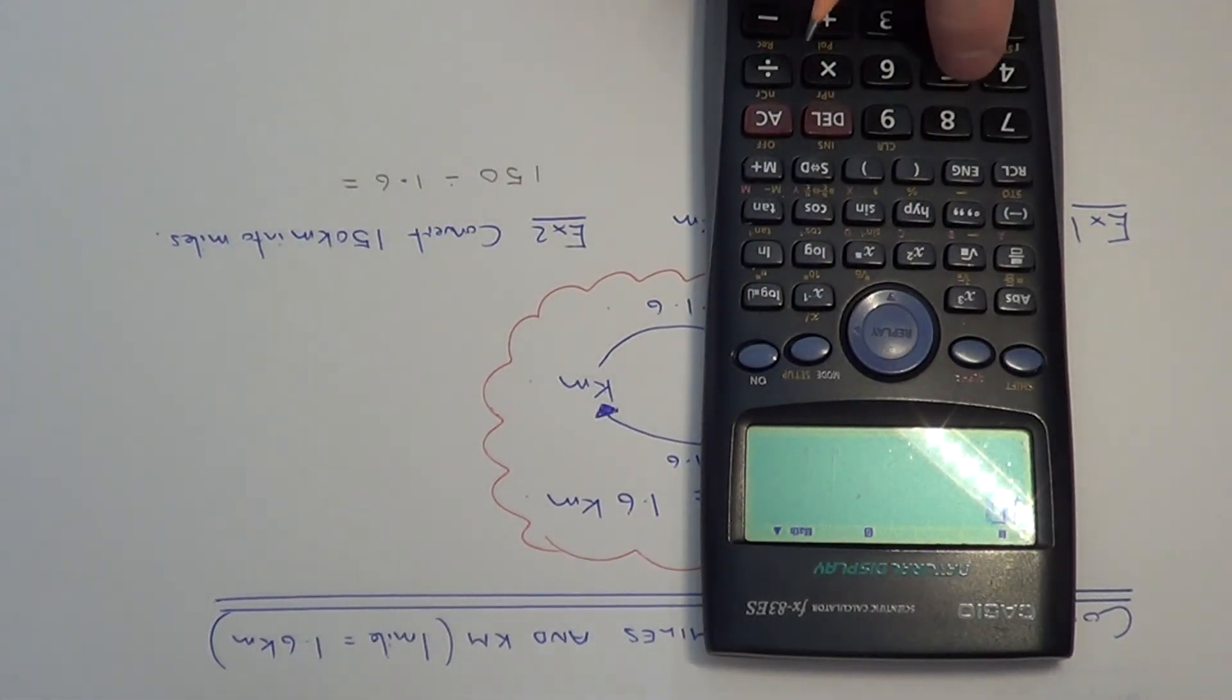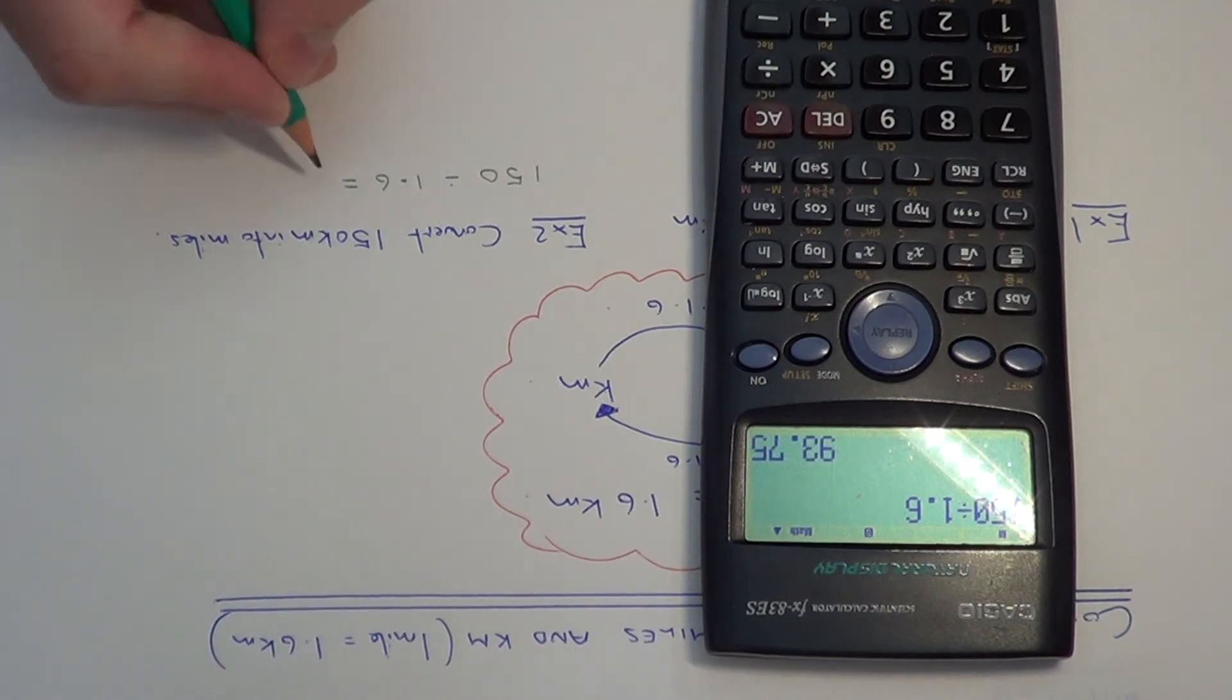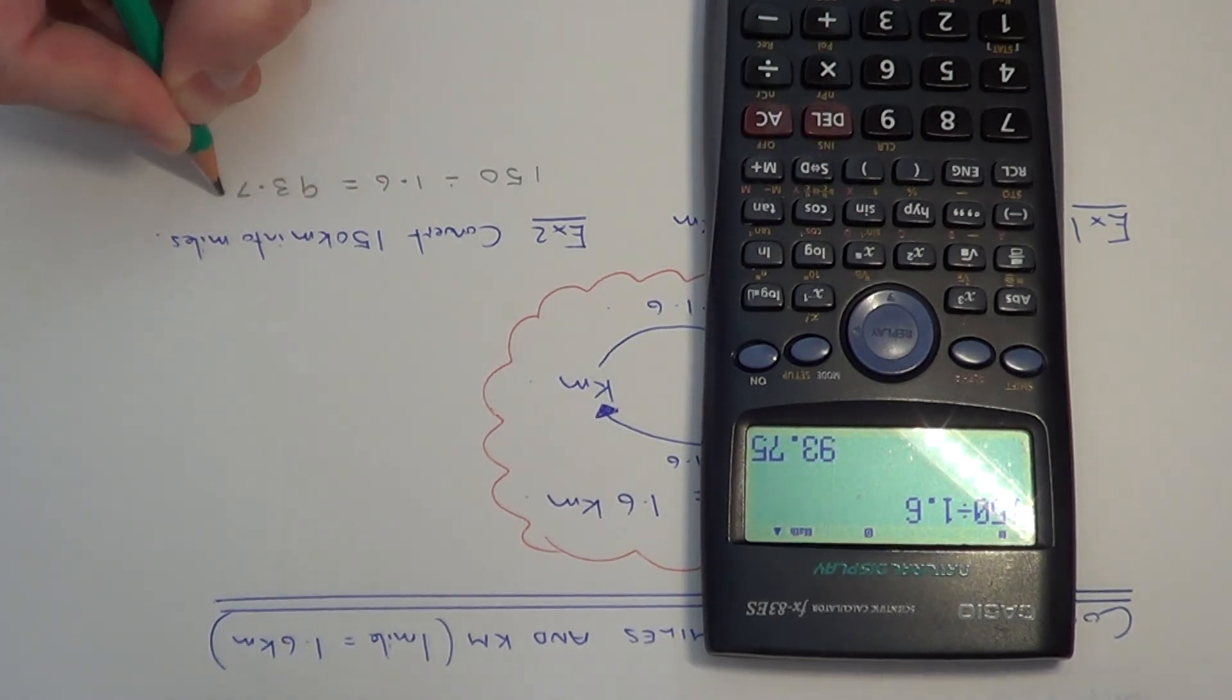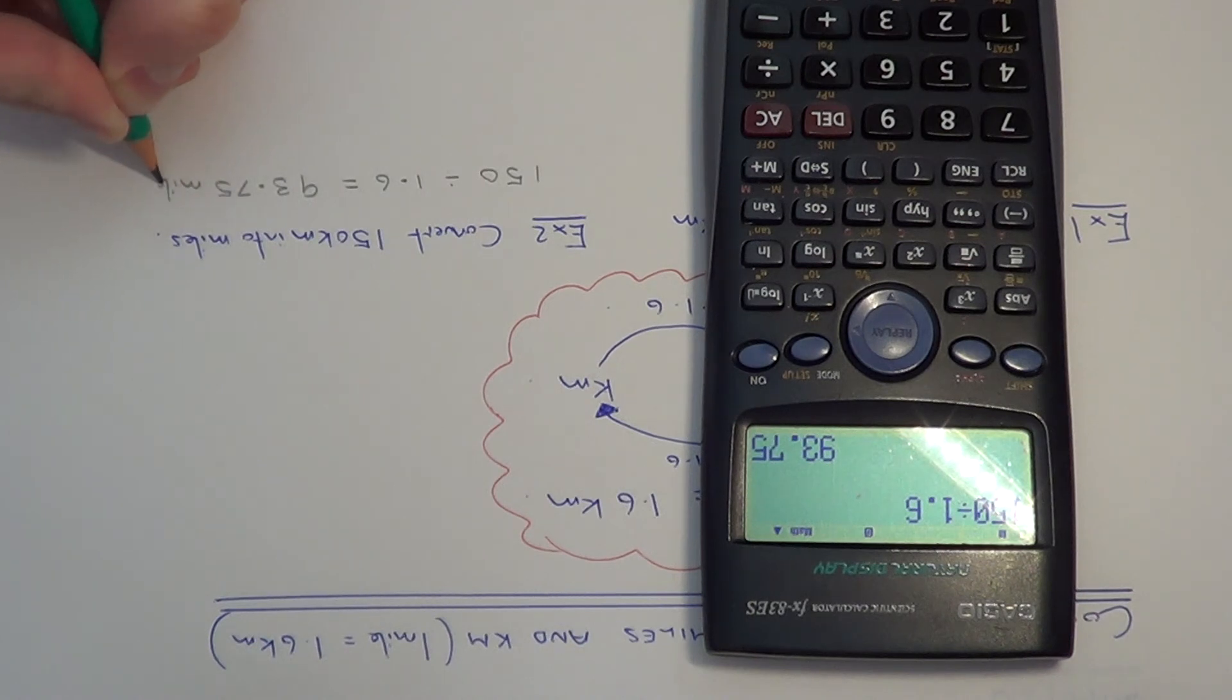So 150 divided by 1.6 gives an answer of 93.75 miles.